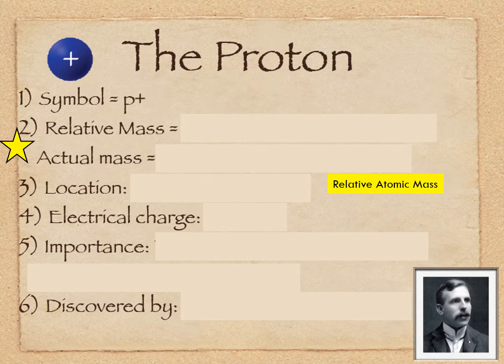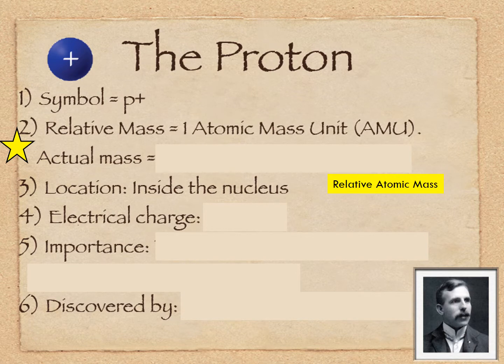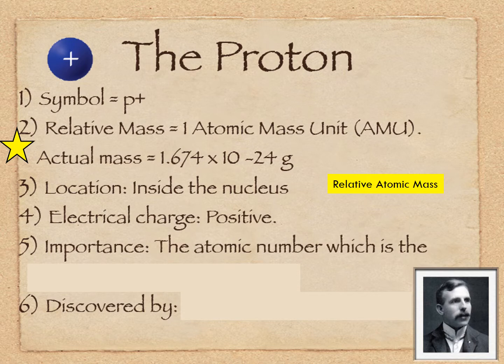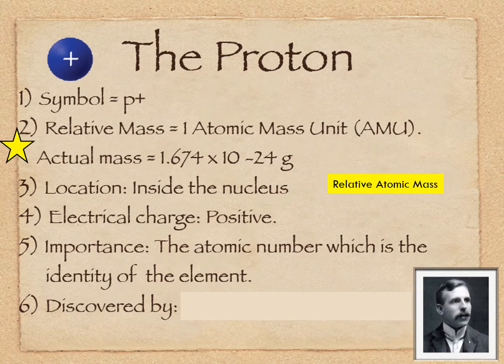The proton is P+, it's inside the nucleus. Its relative mass is one, so we call that one atomic mass unit, one AMU. The actual mass of it is 1.674 times 10 to the negative 24 grams. Working with that number makes it more difficult, so we say one AMU. It's a positive charge. The importance of it is the atomic number, which is the identity of the element — so if the proton changes, the element changes. It was discovered by Rutherford in 1909.